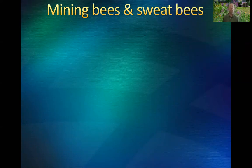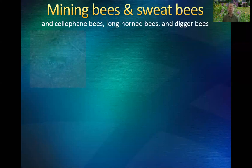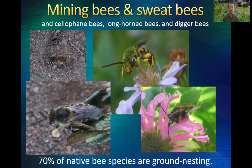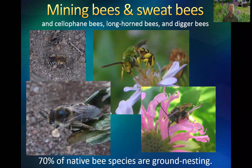Mining bees, sweat bees, cellophane bees, long-horned bees, and digger bees are all underground-nesting species. They need bare soil in order to nest. That patch of bare soil doesn't have to be big — I've seen some of these bees in a lawn fly over to a blade of grass, crawl down, find a bare patch next to the clump, and make their nest there. But if you have a really solid carpet like a golf fairway, there's no nesting location available for those insects.